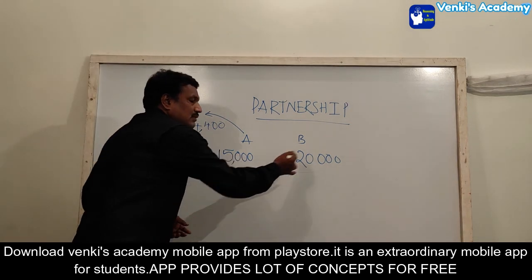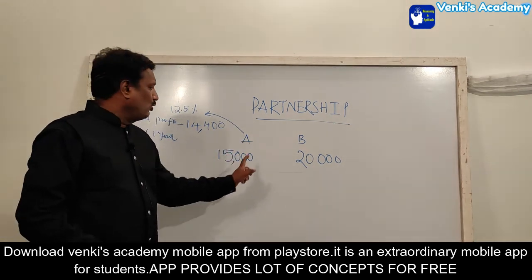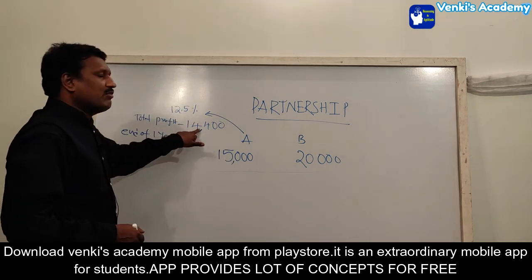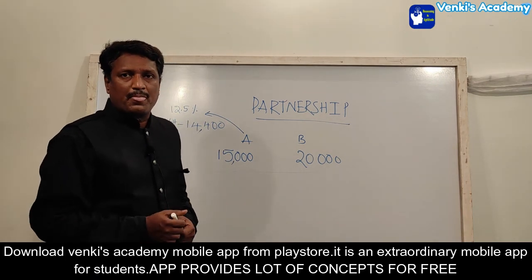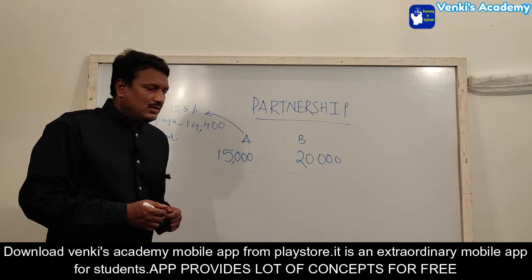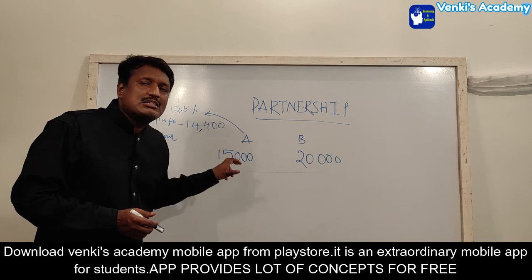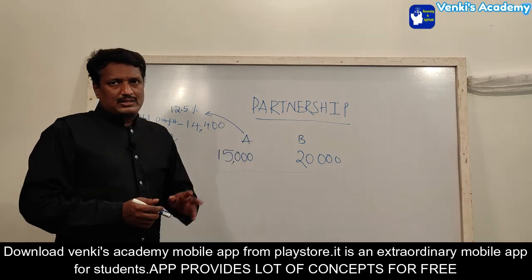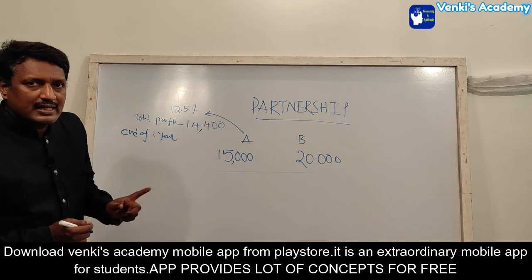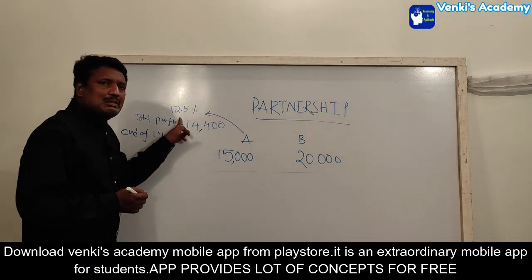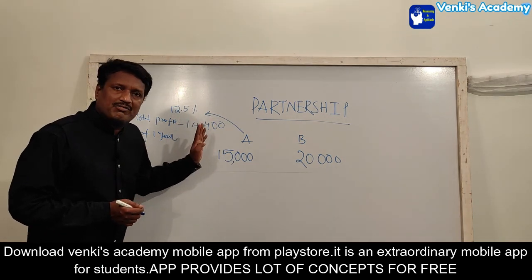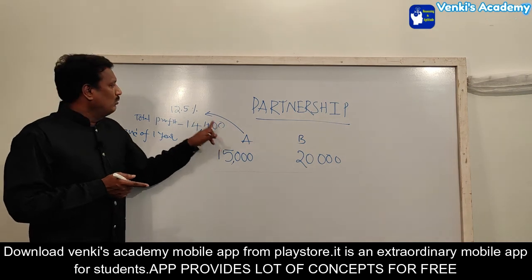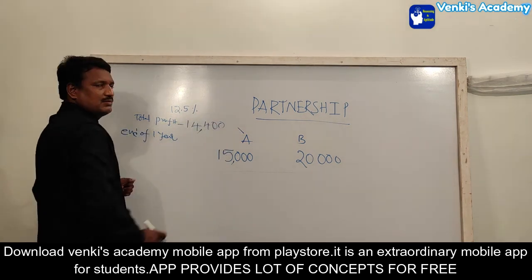The investment ratio is 15,000 to 20,000. The time period is equal — both for one year — so the ratio remains 15,000 : 20,000, which simplifies to 3:4. In the sleeping partner model, the investment ratio is what matters. Now, A gets 4.5% of 14,400 as commission for managing the business.